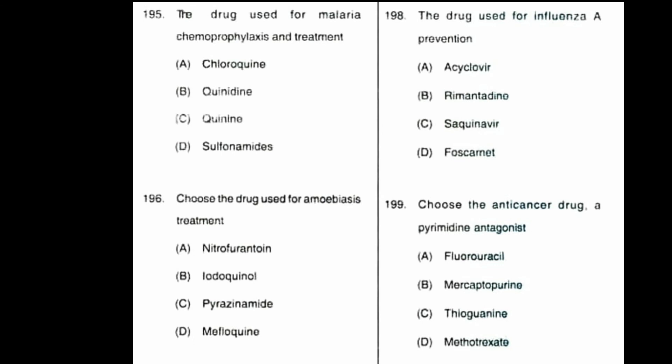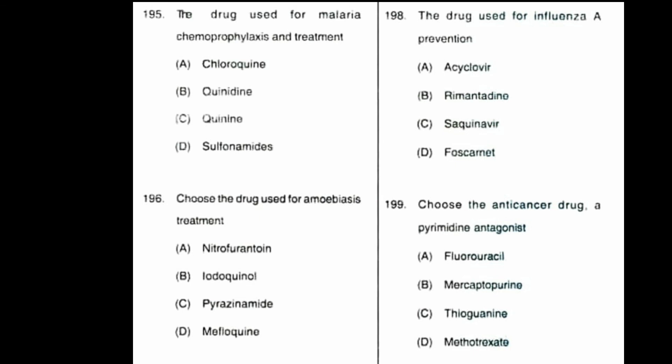Question number 199: choose the anti-cancerous drug which is a pyrimidine antagonist. Option A: fluorouracil, B: mercaptopurine, C: thioguanine, D: methotrexate. Fluorouracil is a pyrimidine antagonist. Option A is the correct answer.